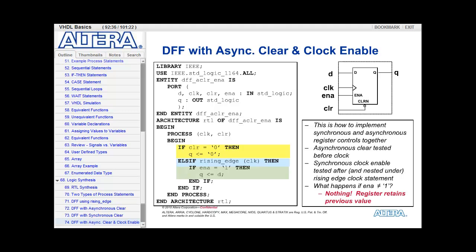Well, it does nothing. In this case, if the enable is not asserted, the register retains its previous value, which is the function of the enable.